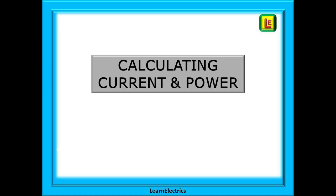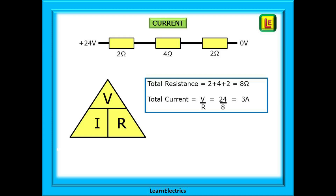Let's begin by calculating current and power. We have a circuit made up of three resistances in series with values as shown in ohms and a voltage of 24 volts across the circuit. Basic Ohm's Law tells us that voltage divided by resistance gives us the amps flowing through the circuit. Adding the resistances gives eight ohms, and 24 volts divided by eight ohms gives a current of three amps.